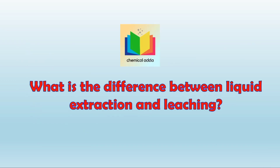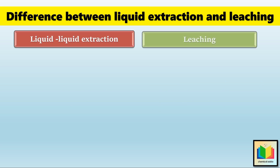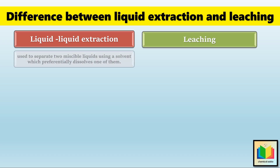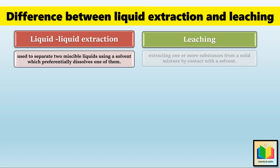What is the difference between liquid extraction and leaching? Liquid extraction and leaching are both separation processes. In both processes, one constituent from a solid or liquid is removed by means of a liquid solvent. But these two methods differ in their mechanisms and applications. The first point of difference: liquid extraction is used to separate two miscible liquids using a solvent which preferentially dissolves one of them. Whereas leaching is the process of extracting one or more substances from a solid mixture by contact with the solvent.